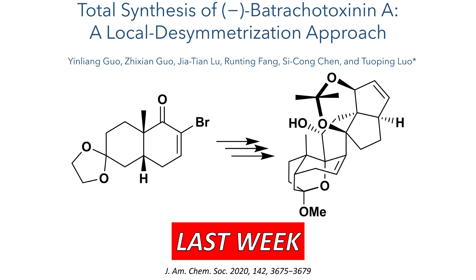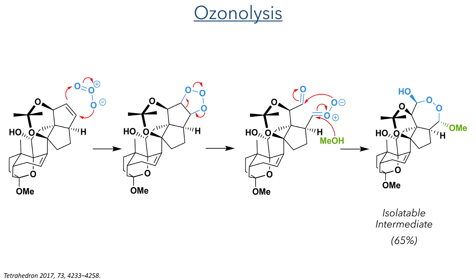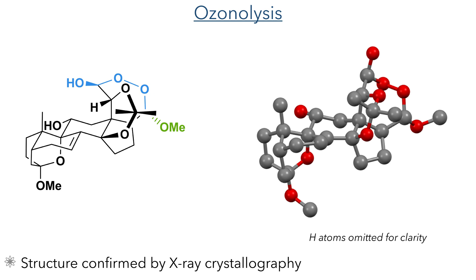This acetal was the first product of a multi-step sequence which proceeded with an ozonolysis reaction. The molecule is reacted with ozone gas and a 3+2 cycloaddition occurs, forming a molozonide which then undergoes a cyclo-reversion to form an aldehyde and a carbonyl oxide. This reacts with methanol, used as a solvent, which ultimately forms a methoxyhydroperoxyacetal. The authors managed to isolate this unusual intermediate and confirmed its structure using X-ray crystallography.